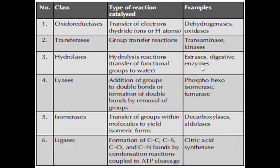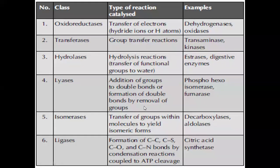Examples of hydrolases are esterases and digestive enzymes such as trypsin, chymotrypsin, pepsin, and papain. The fourth class is Lyases — they catalyze the addition of groups to double bonds or the formation of double bonds by removal of groups. Examples are phosphohexose isomerase and fumarase.